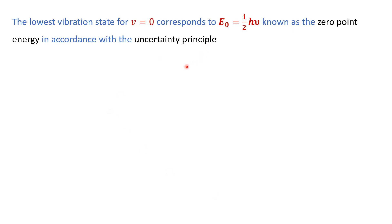There is a very interesting result for v equal to 0: we still have some non-zero energy, known as the zero-point energy. This is in accordance with the uncertainty principle — if this energy were zero, the uncertainty in position would be zero and the uncertainty in momentum would be infinite. Quantum mechanics requires that we must have some non-zero energy even at the zero vibrational state.